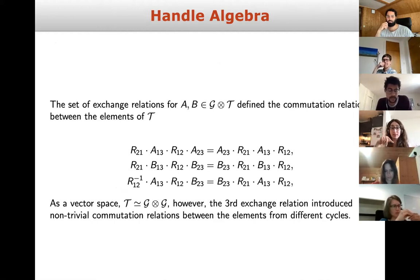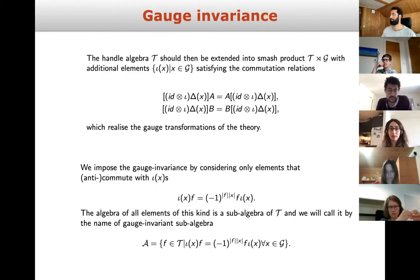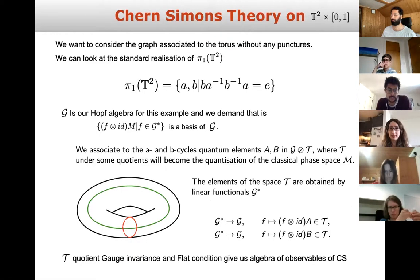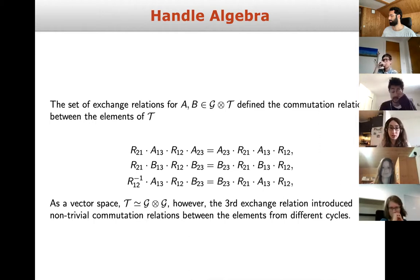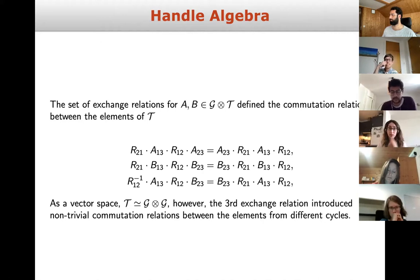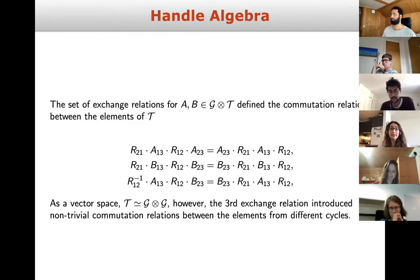I want to show you the set of exchange relations between the quantum elements A and B. Looking at the first two relations, they are just relations between A's with each other or B's with each other. The third one is the exchange relation that introduces non-trivial commutation relations — the first ones are trivial for the torus with one loop a and one loop b, but become non-trivial for more complicated surfaces.